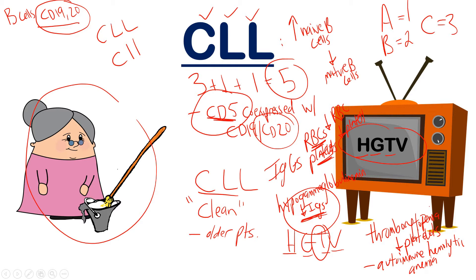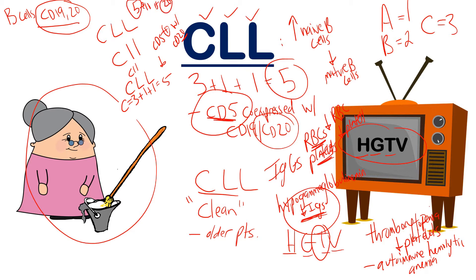Quick review: CLL — A=1, B=2, C=3, so C equals 3. Write CLL with two lowercase l's: 3+1+1=5. That tells you this involves CD5 positivity, co-expressed with CD20. How do you remember CD20? Because it's an interval of 5: 5, 10, 15, 20. So this disease is CD5 positive and CD20 positive — that's how you recognize CLL using the mnemonic.